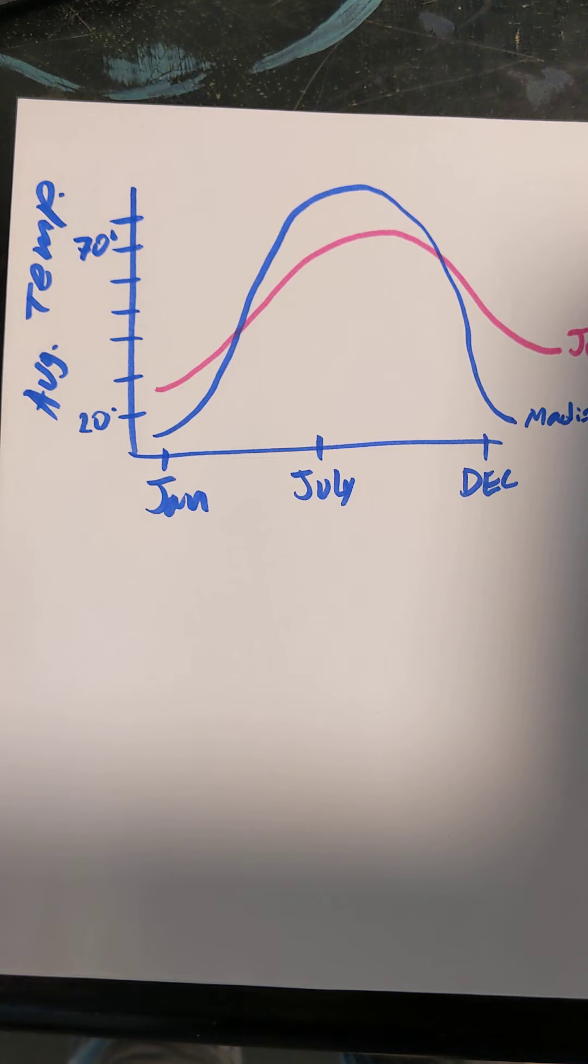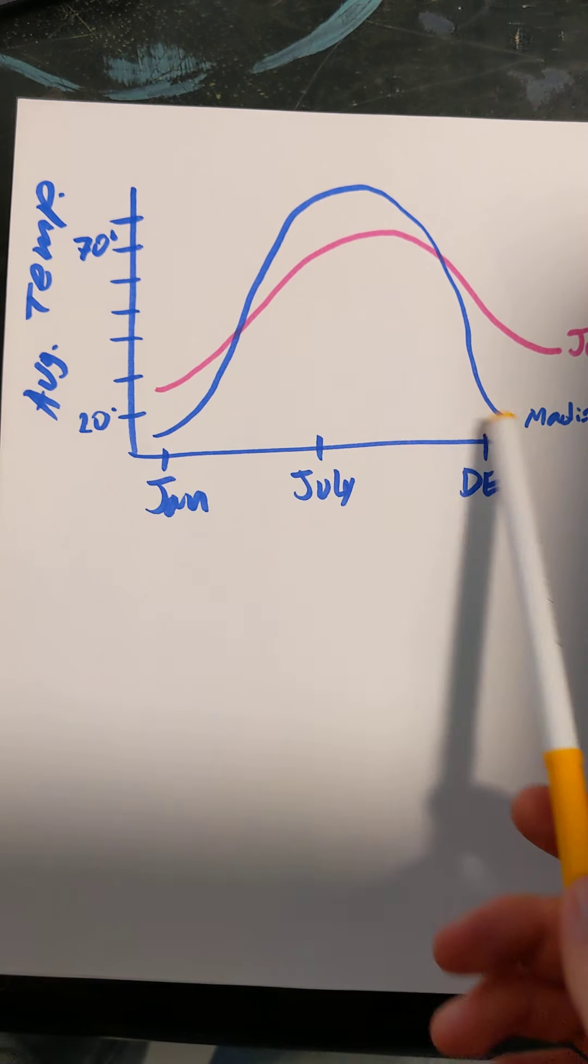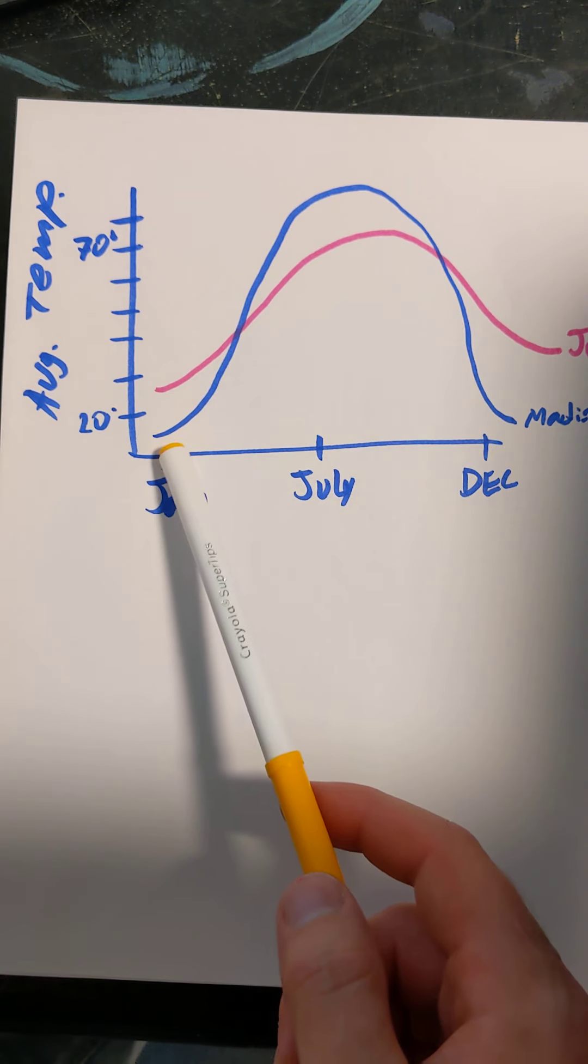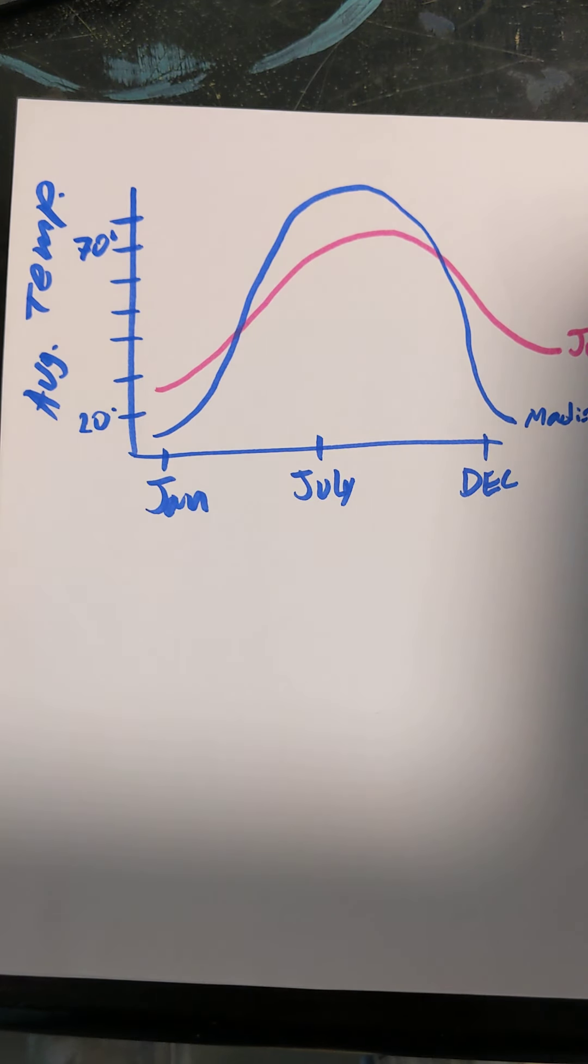for which of the two cities is the standard deviation of the 12-month average temperature greater? Okay, let's think about that. Standard deviation is how spread out something is. Which one's more spread out? Madison has both a bigger maximum and a smaller minimum, so Madison has a greater standard deviation. The average monthly temperature deviates more from its mean than Juneau's temperature has the chance to deviate. So those are things that we should be looking at when we're looking at quantitative variables represented in graphs.